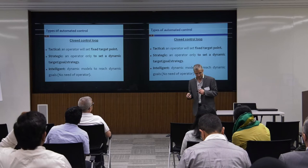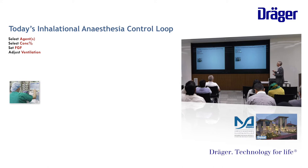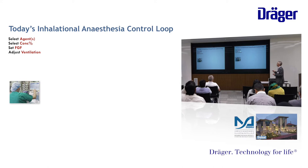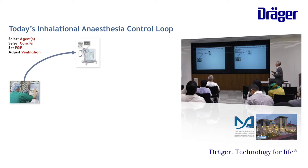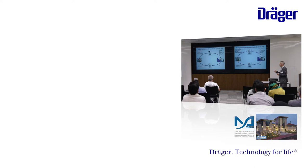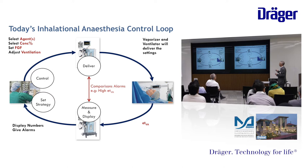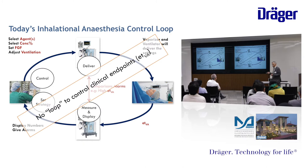Thanks God that the current machines are strategic — not intelligent. Today, in inhalation anesthesia practice, we are selecting the agent, selecting the concentration, selecting the fresh gas flow, adjusting the ventilator setting, and giving all this input to the machine. The machine drives to the patient via vaporizers. The patient gives us end-tidal volatile anesthetic displayed on the machine. The operator analyzes this output and makes a decision. He is the one controlling strategy while the machine just delivers and measures. There is no impact of output on input except through the operator — this is an open loop.